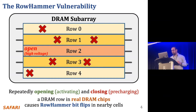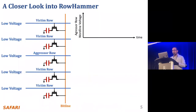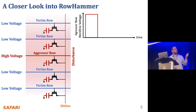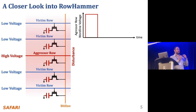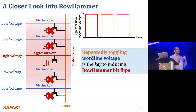This vulnerability is called rowhammer. We name the repeatedly accessed row the aggressor row, and the rows that experience bit flips the victim rows. In a column of DRAM cells, applying high voltage to the aggressor row disturbs the nearby cells. When we do this many times, we see bit flips. Essentially, repeatedly toggling the wordline voltage is the key to inducing rowhammer bit flips.